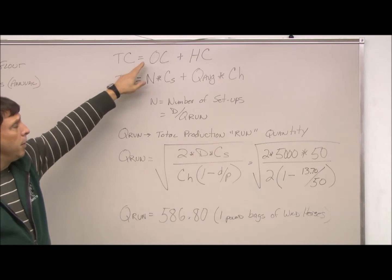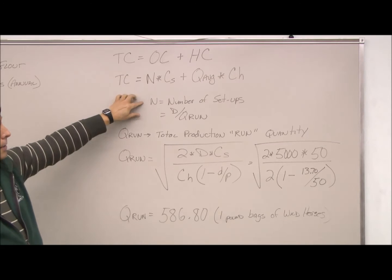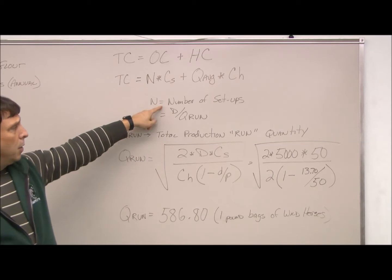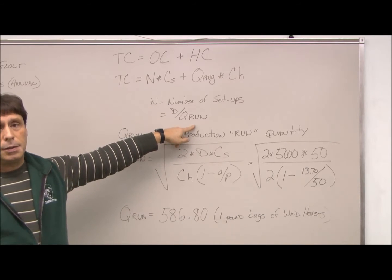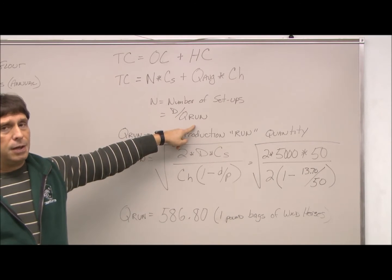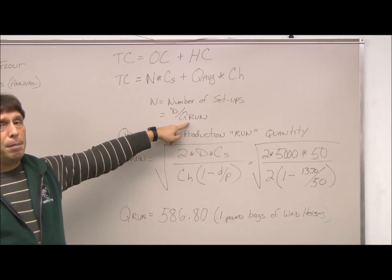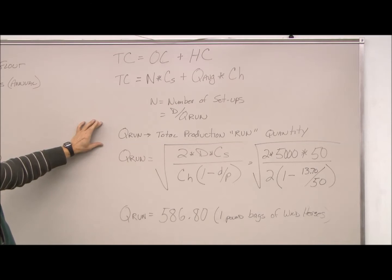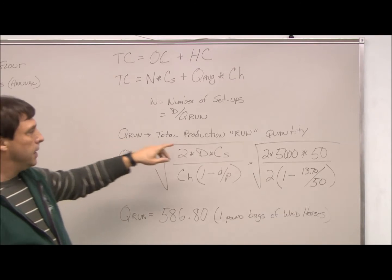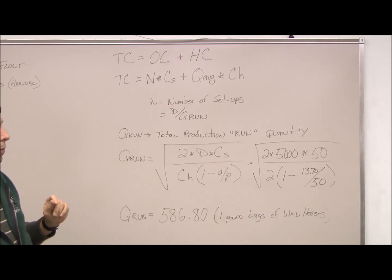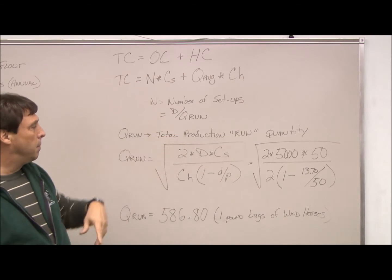So looking at ordering costs first, N is the number of setups, which is the same, you remember that it's our D over our Q. Just to be specific, we're going to be using Q run here, which is the total amount produced. So Q run is the total run quantity, because that's kind of slang used in this environment. We call a production run just a run. So D divided by Q run.